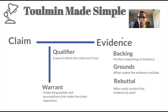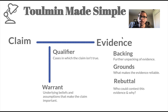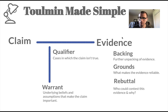Grounds is about why that evidence is reliable. It's similar in some ways to backing in that you're reinforcing the evidence and making it stronger. But instead of focusing on purely explaining, grounds focuses on why should I believe you. So if you were to say a recent study found nine out of ten dogs are friendly, I would ask 'What study?' — and you would want to provide me additional grounds about why this study is reliable.